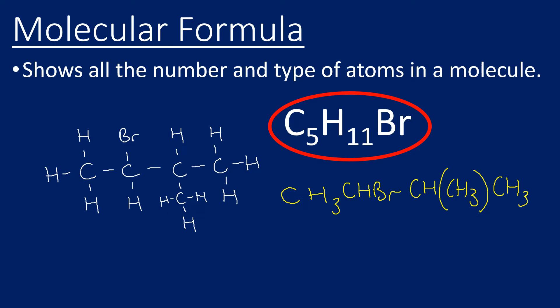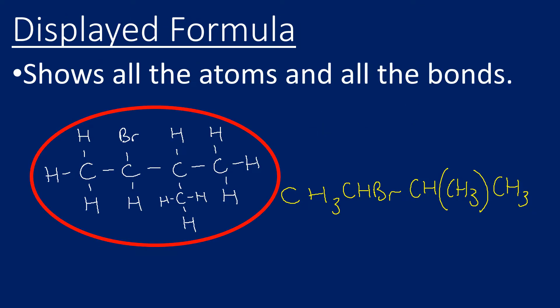A little bit of background: a molecular formula shows us the number and types of atoms. For example, this molecule contains five carbons, eleven hydrogens, and one bromine. The displayed formula not only shows all the atoms present, it also shows the full structure with all of the bonds — every bond is drawn and shown, including exactly how those five carbons, eleven hydrogens, and one bromine are connected.